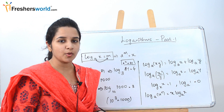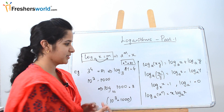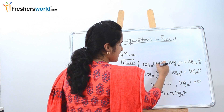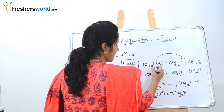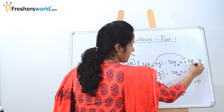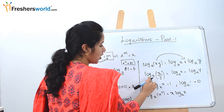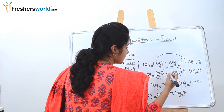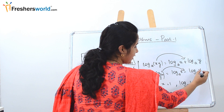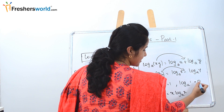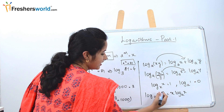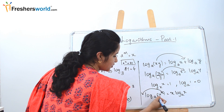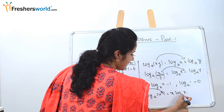Other important formulas to be aware of: log_a(xy) = log_a(x) + log_a(y) — multiplication becomes addition. log_a(x/y) = log_a(x) − log_a(y) — division becomes subtraction. log_a(1) = 0. And log_a(x^n) = n·log_a(x) — the power n can be moved to the front.